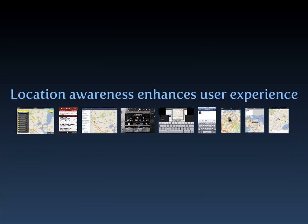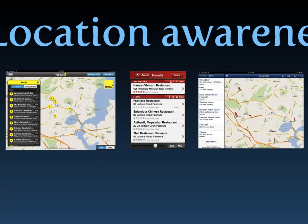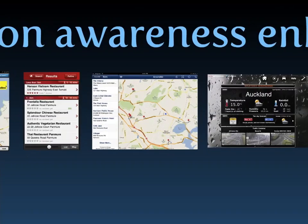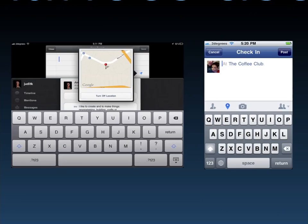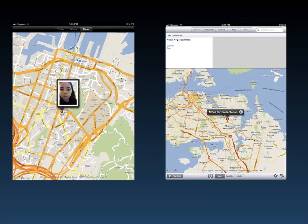Giving your app the ability to respond to location enhances the user experience because it brings them into a familiar context. Many apps take advantage of this, creating different ways of interacting with local data and places for many different purposes — navigation, social, business, and productivity. By knowing your location, an app can show you nearby businesses, bars, and restaurants; give you real-time weather and traffic updates; share your location with friends to facilitate social interactions; or categorize your photos, videos, and notes by where you created them. There are even augmented reality apps like Wikitude that just show you what's been geotagged around you.